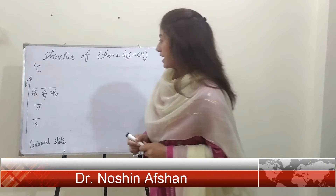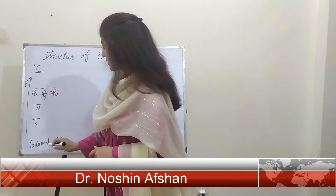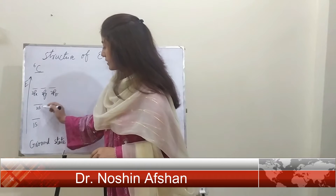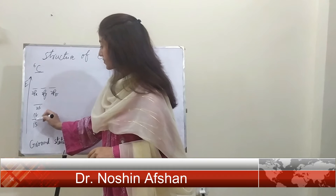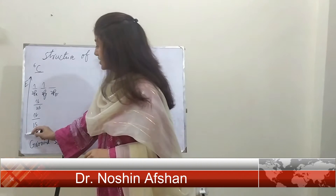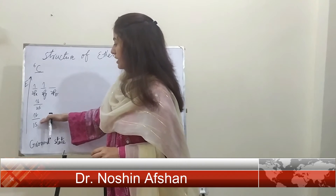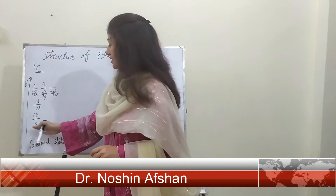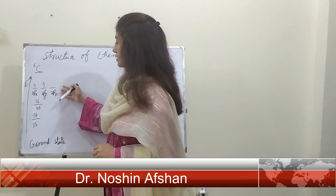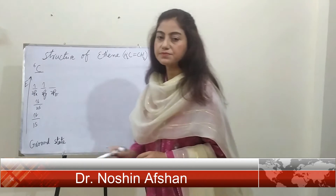As you know, the electronic configuration of carbon with atomic number 6 at its ground state becomes like this: 1s², 2s², 2px¹, 2py¹, and 2pz would be empty. The energy level increases from bottom to top. If we consider the placement of the atomic orbitals with respect to energy level, then 1s orbital would be at the lowest energy level, then 2s would be a bit higher than 1s, and 2px, 2py, 2pz would be at a bit higher energy level compared to 2s.